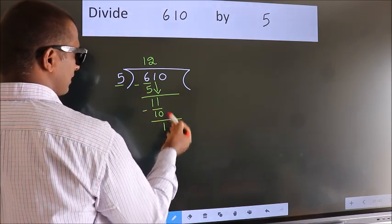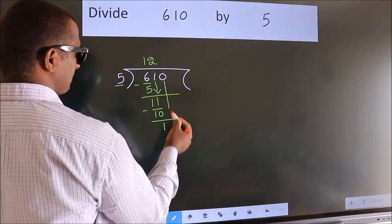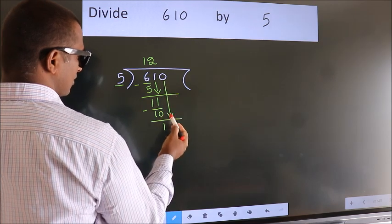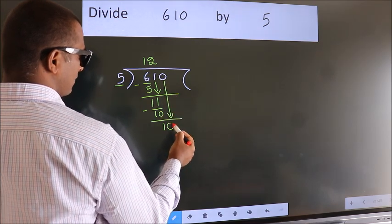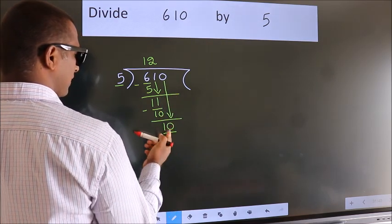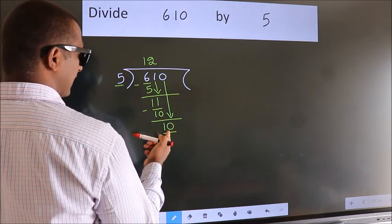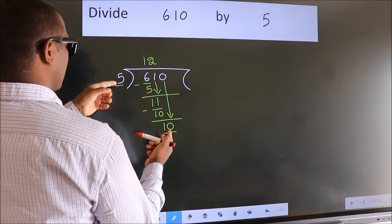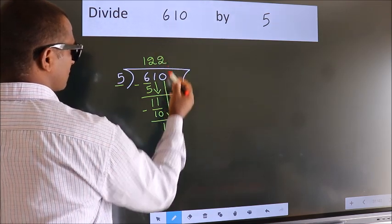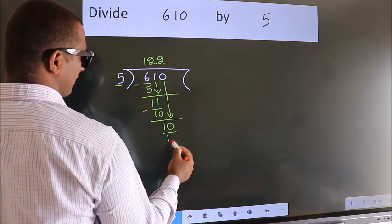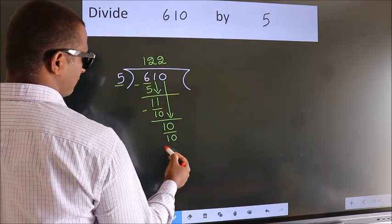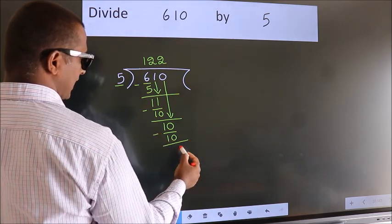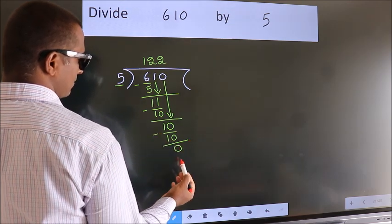After this, bring down the beside number. So, 0 down — so, 10. When do we get 10 in the 5 times table? 5 twos 10. Now we subtract. We get 0.